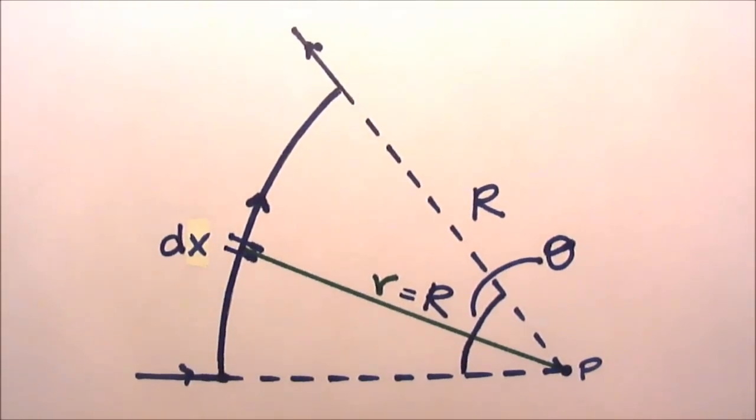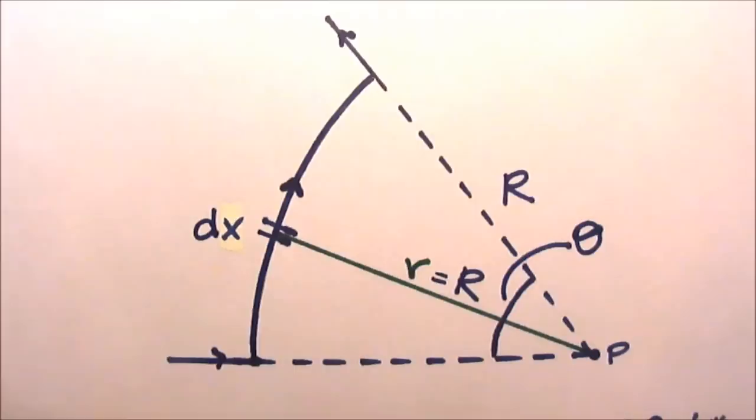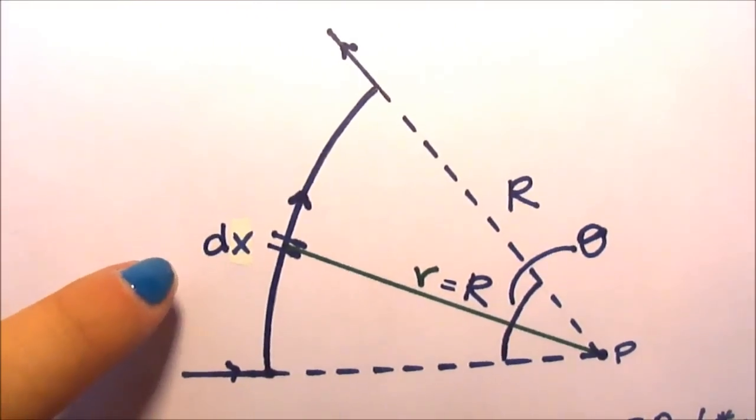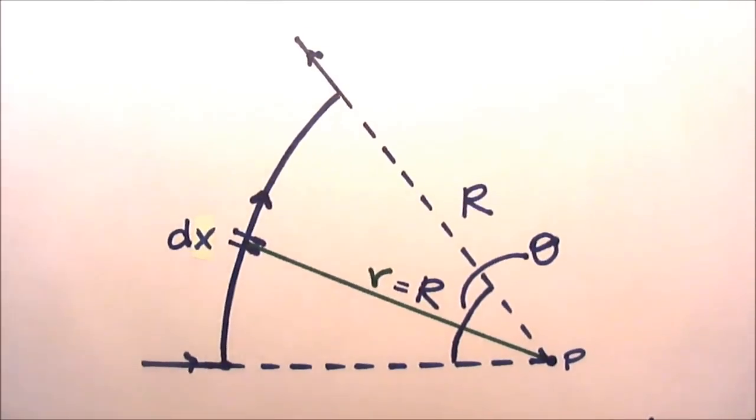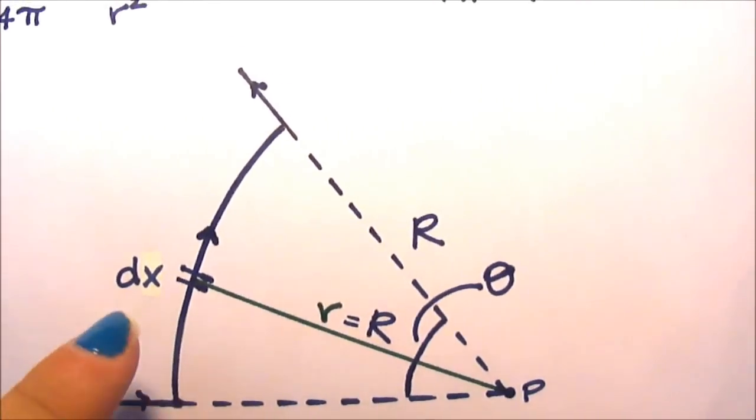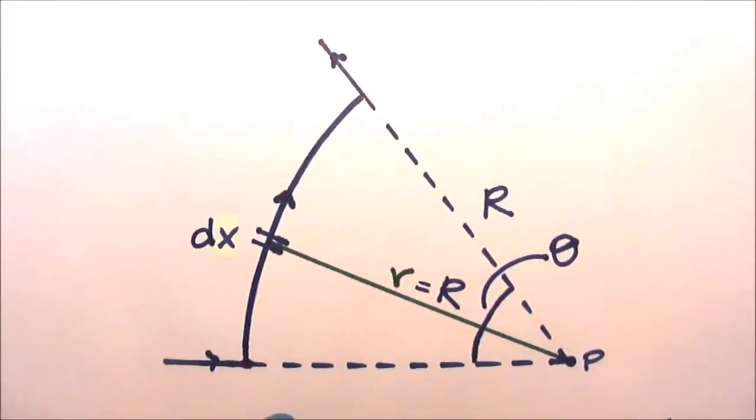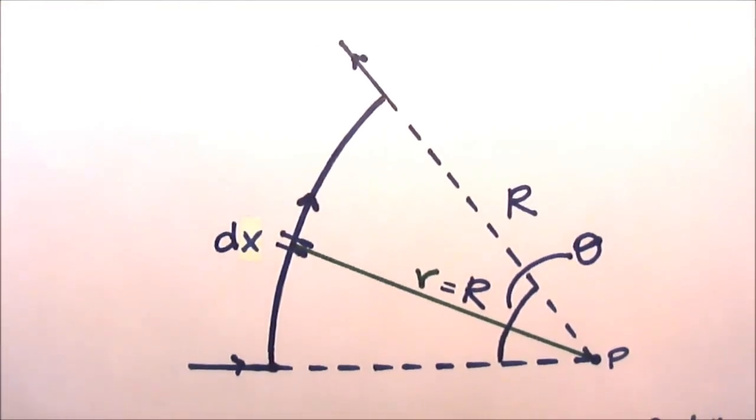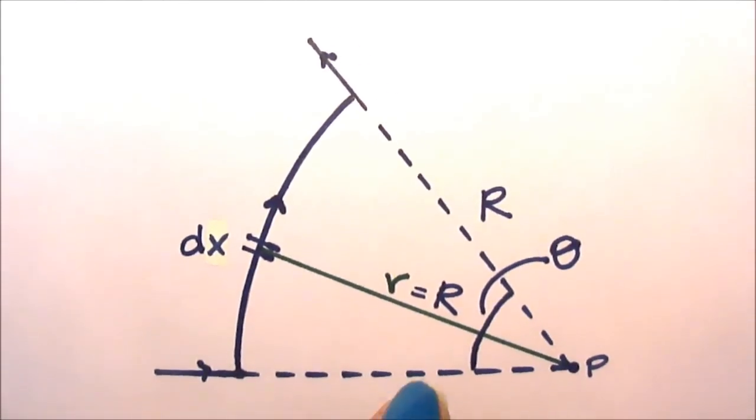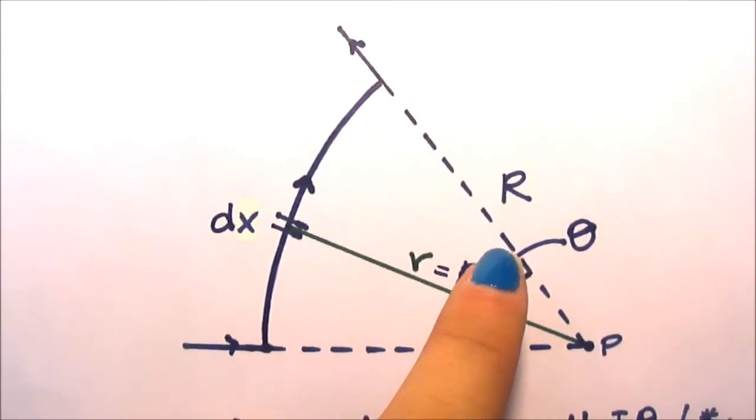Now we have to find the magnetic field over the entire arc. So first what we're going to do is break the arc into a segment, dx. As previously established, the distance from point P to the segment is constant all the way across the segment, because it's a circle, which means that the distance is really just the radius. And so our radius is just going to be r equals capital R, which was given to us in the figure.